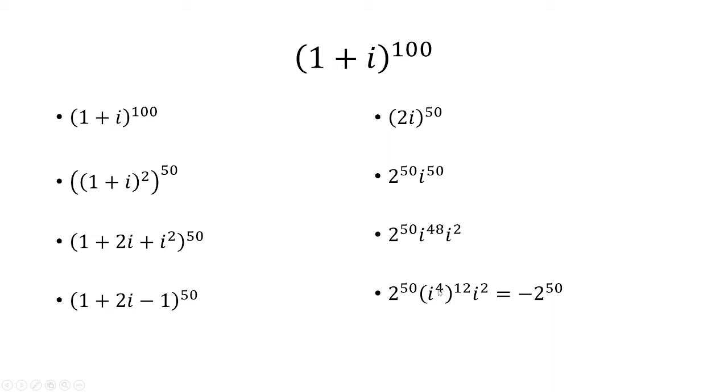And i^4 is just 1, so 1 raised to the 12th power is 1. i squared is -1, so 1 times -1 is going to give me -1. And then we multiply that by 2^50 to get -2^50. And that is our answer.